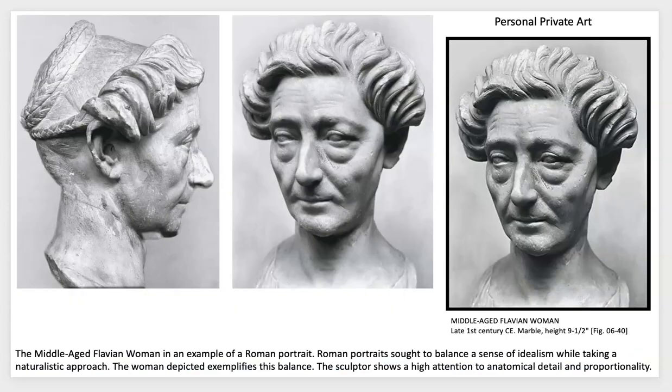On the same note, artists were also making very realistic sculptures and paintings not just of the young and beautiful, but also showing the value of aging. Someone took the time to make these sculptures, indicating a realism to what was being created. The attention to detail and proportionality is really obvious in this particular middle-aged Flavian woman sculpture made in marble — the technique and tools are very sophisticated.